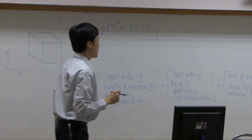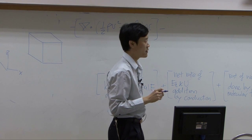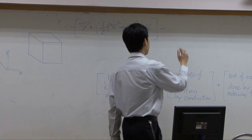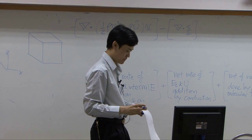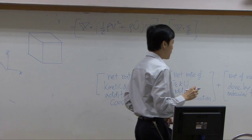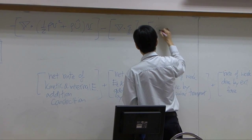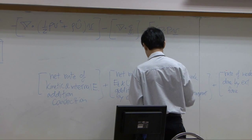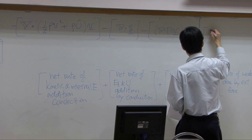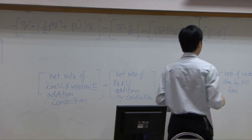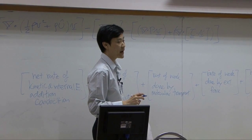For conduction, conduction can be represented using Fourier's law. The net rate of change by conduction is delta dot q. For work, work done by molecular transport can be represented by two terms: delta dot pv — that's flow work — plus the other term, tau dot v.